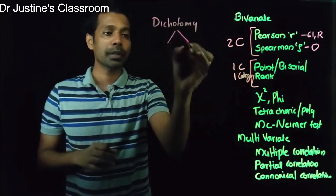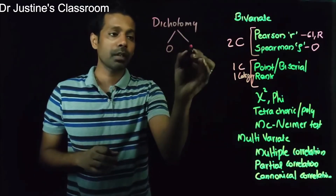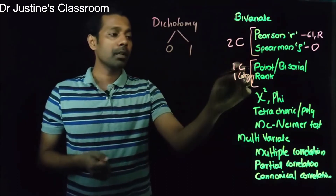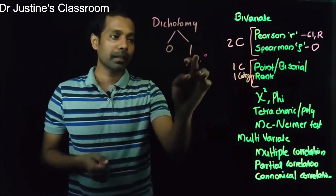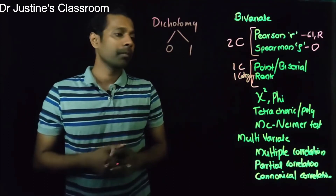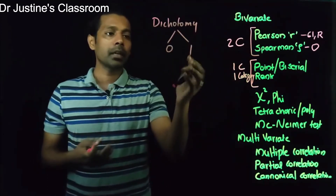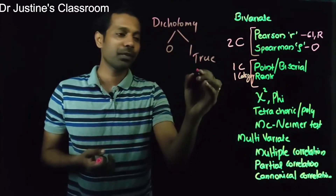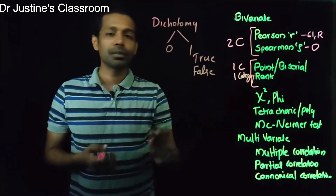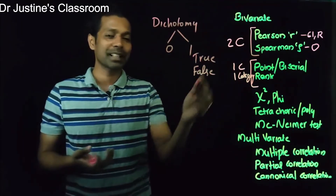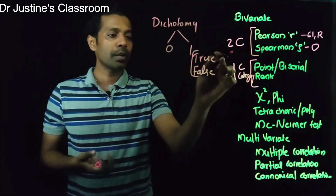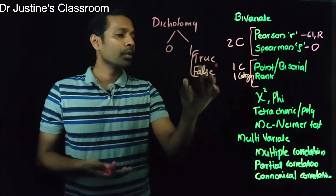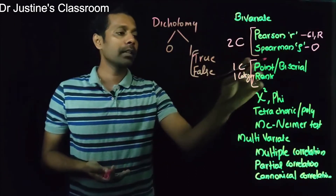Dichotomy means you have two options — for example, zero and one, yes or no, right or wrong. So one variable is continuous and the other is a dichotomous categorical variable. This dichotomy can be a true dichotomy or an artificially created dichotomy. Based on that, you decide whether to use point biserial or biserial correlation.